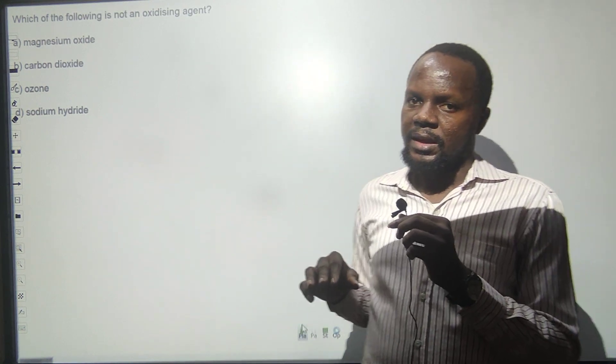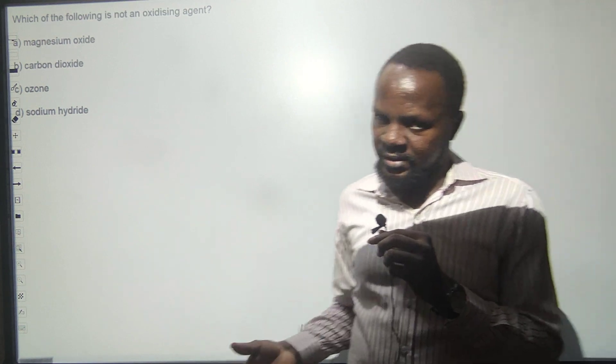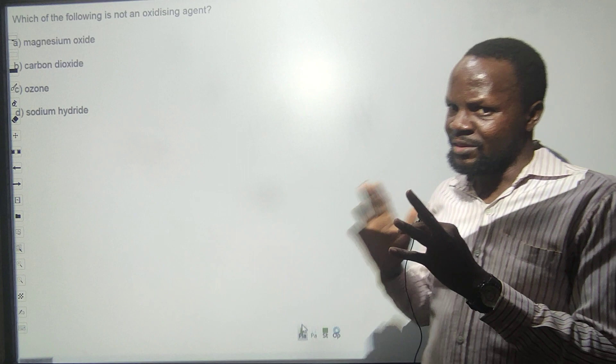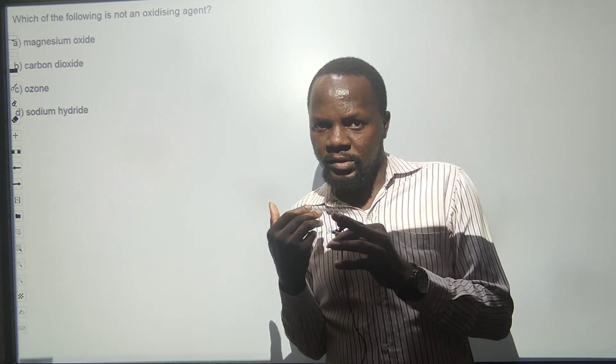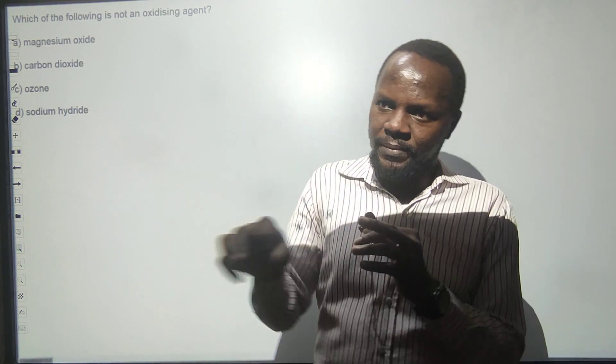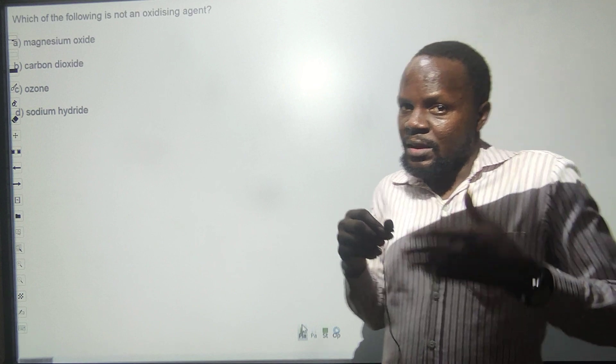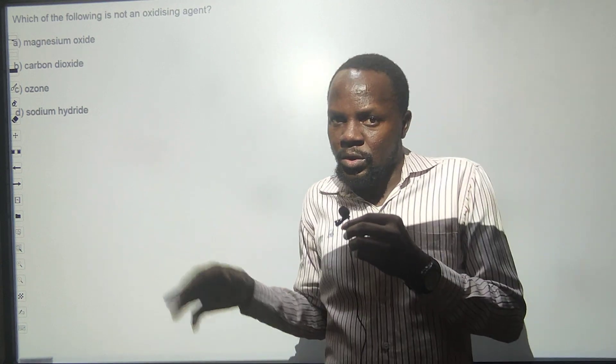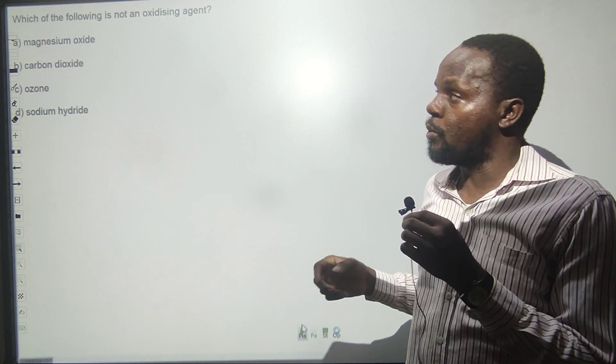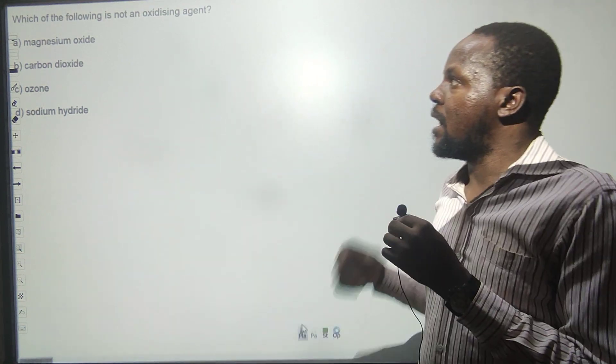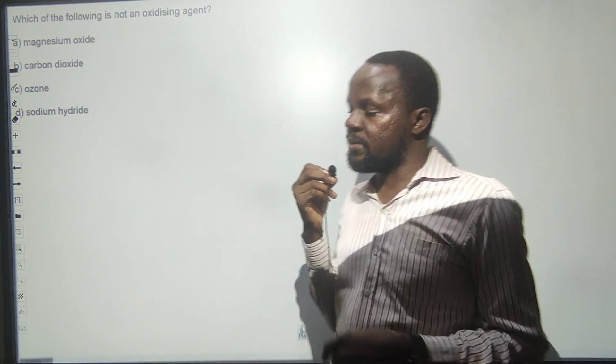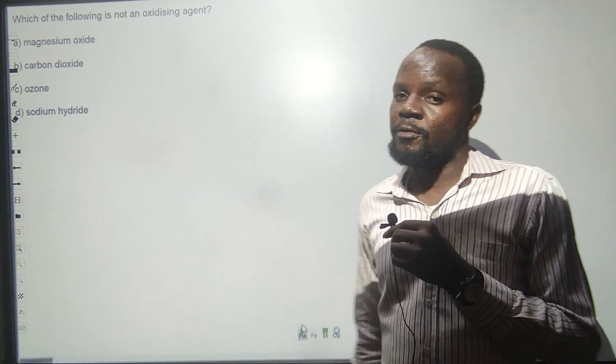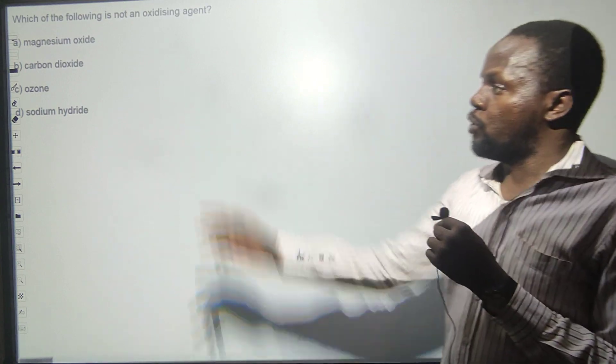An oxidizing agent are those components or elements that get themselves reduced in a redox reaction. When something is reduced, there is removal of oxygen or addition of hydrogen or a decrease in oxidation state. When there's a decrease in oxidation state, it has been reduced. We have magnesium oxide, carbon dioxide can act as an oxidizing agent, ozone is a powerful oxidizing agent.